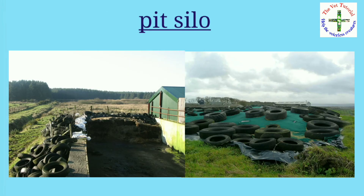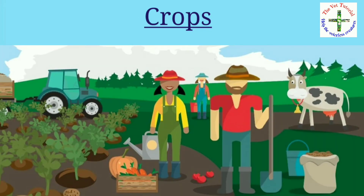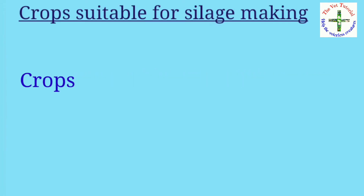In India, at most farms, pit silos are the most popular type. Now let's study the crops suitable for silage making and the stage at which the crop is suitable for ensiling.